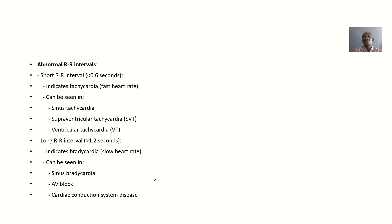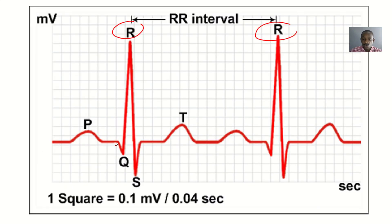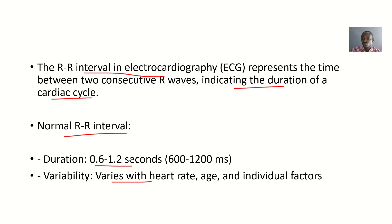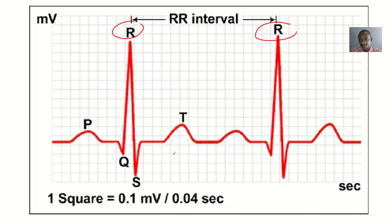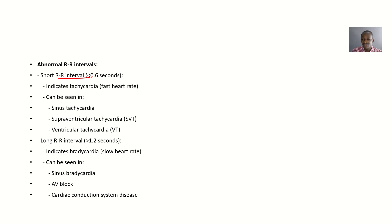Now for the abnormal — we know the normal to know the abnormal. It could be that the interval is less than 0.6 seconds, meaning there's a shortened R-R interval. That indicates the heart is beating too fast — that's tachycardia. It can be seen in things like sinus tachycardia, supraventricular tachycardia, or ventricular tachycardia.